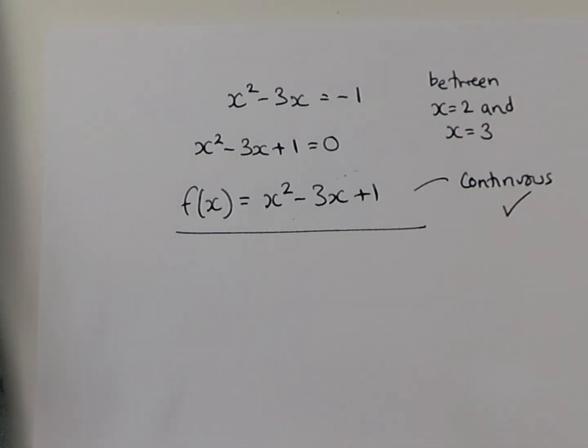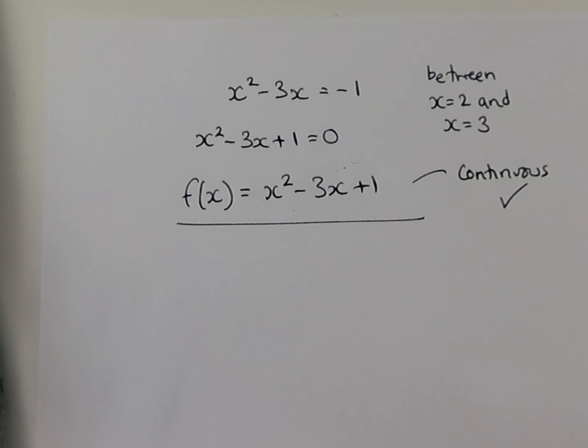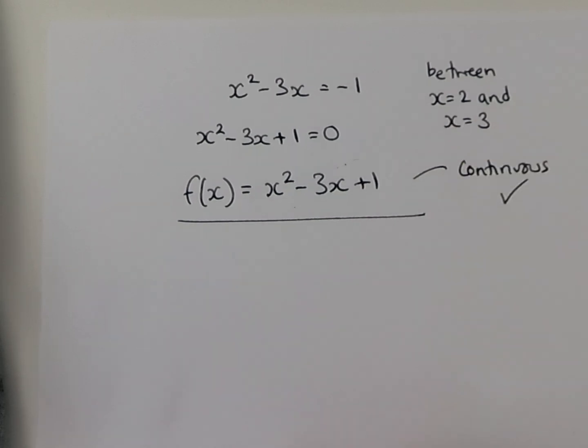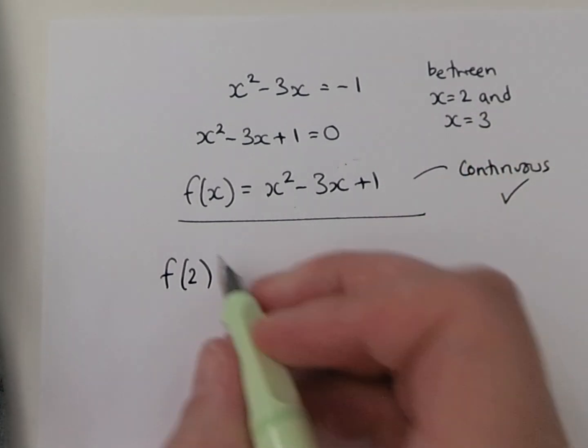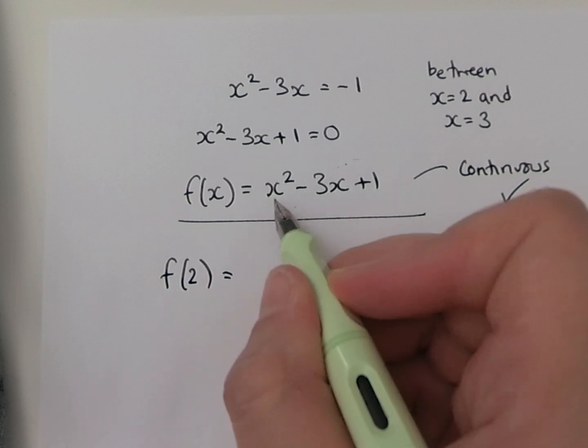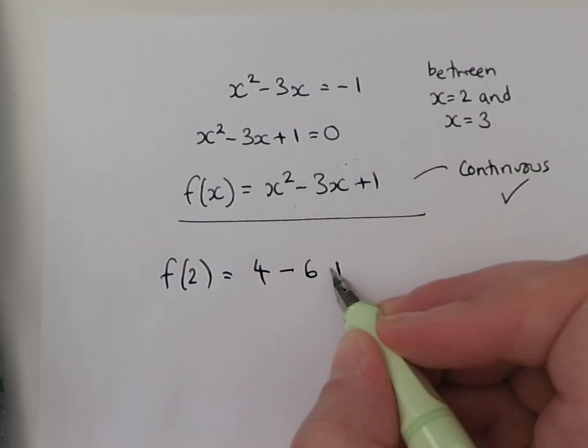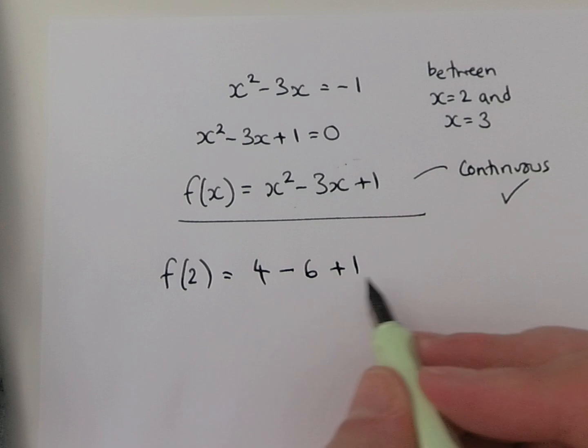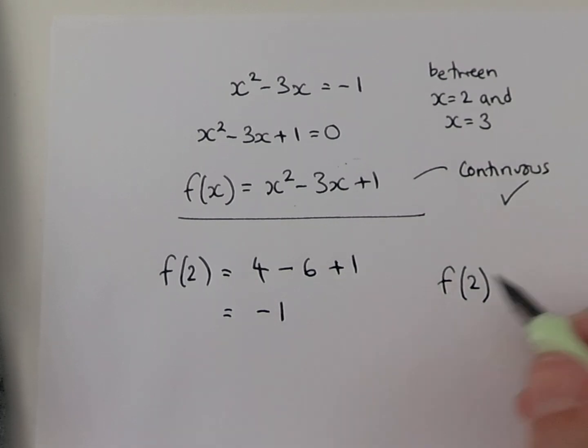We know that's a continuous curve, so we know we can use the sign rule. There's no jumps or splits in it. Now we've got to show that there's a solution in this range, so all I'm going to do is substitute in these values. The first one I'm going to look at is when x is 2. So f of 2, I'm going to substitute 2 in for every x. So I'm going to have 2 squared which is 4 minus 3 lots of 2 which is 6 plus 1. Well, 4 minus 6 plus 1 is minus 1, so f of 2 is minus 1, which is less than 0, so it's negative.